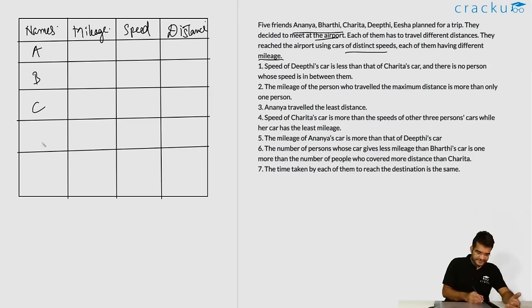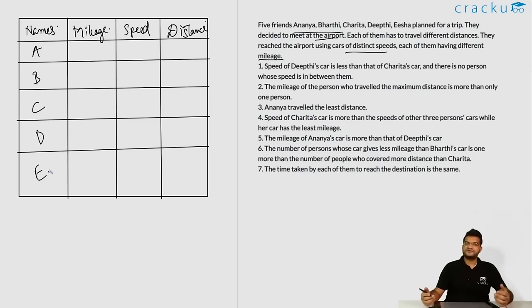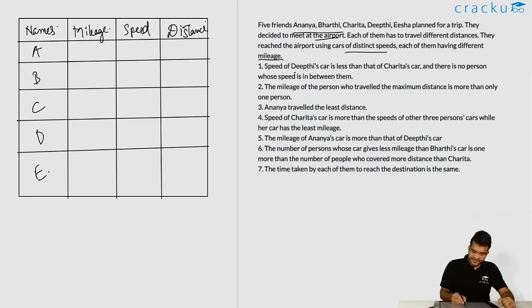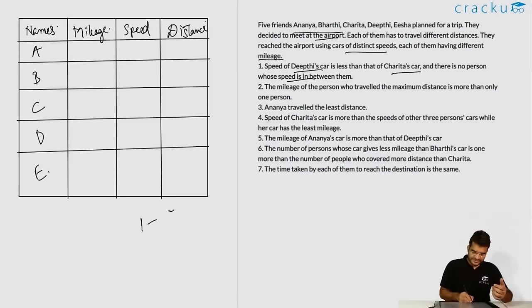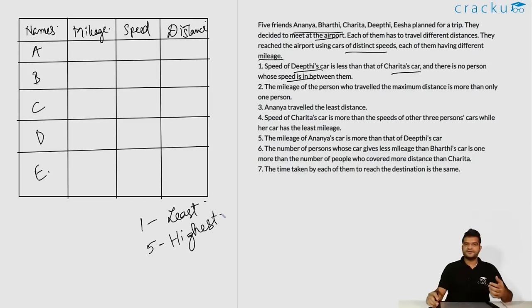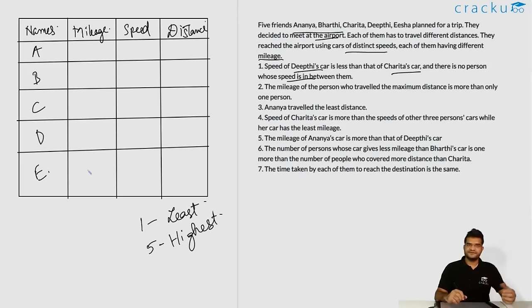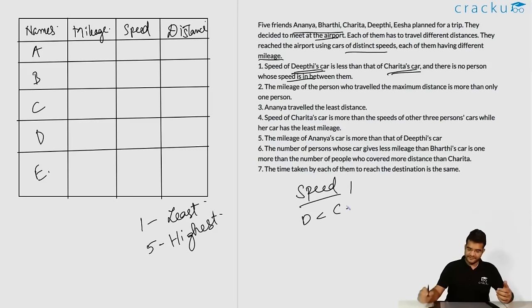In the table, the number 1 represents the least rank and 5 represents the highest rank for mileage, speed, and distance. Working through the clues: the speed of Deepti's car is less than Charitra's with nobody in between, so they are consecutive ranks. The mileage rank of the person who traveled the maximum distance is 2 — more than only one other person. Ananya traveled the least distance, so Ananya's distance rank is 1.